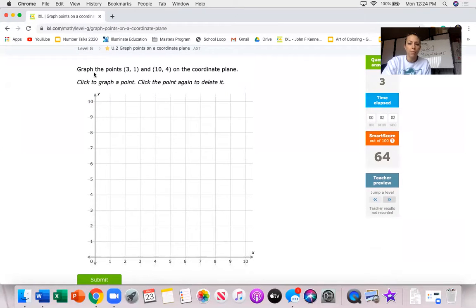Eventually you're going to be asked to graph two points in the coordinate plane. So I start with 3-1 so horizontal 3 vertical 1 and I start with 10-4 oops I put that at 10-3.